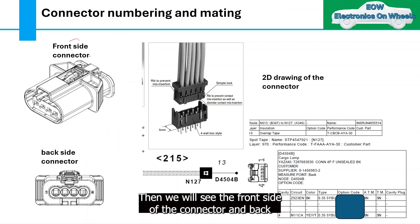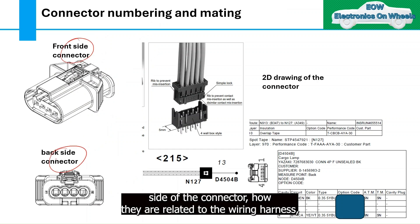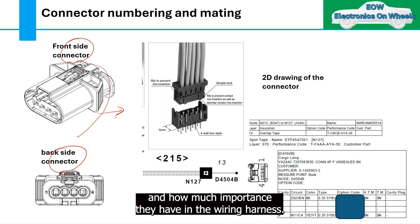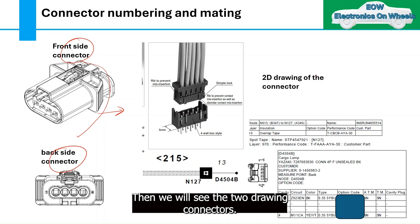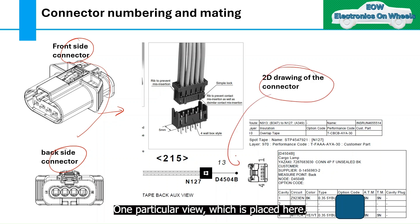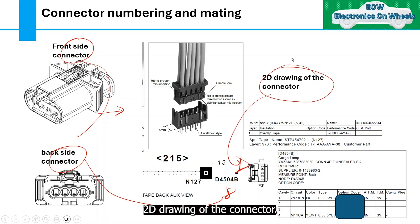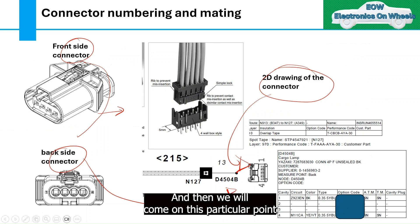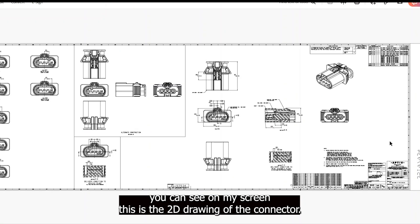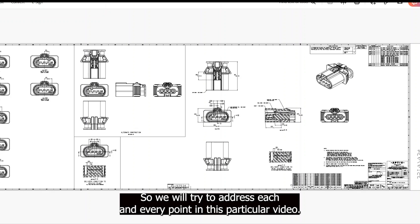We will also cover the part number list with the child parts of the connector, connector numbering and mating, the front side and back side of the connector, how they relate to the wiring harness, and the 2D drawing of the connector.